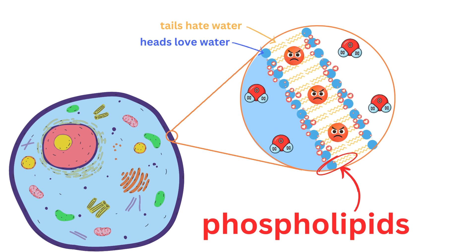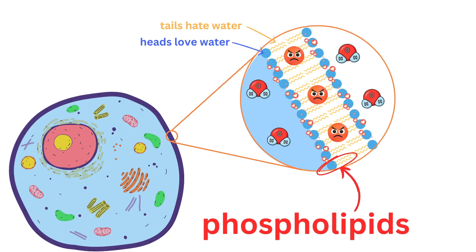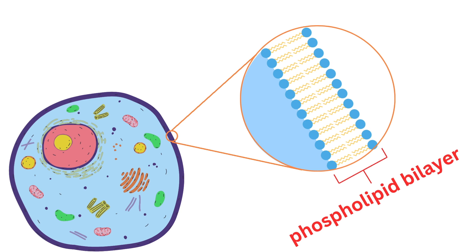Creating a barrier that's tough for many substances to cross. This structure is known as the phospholipid bilayer, a flexible yet strong layer that makes up the foundation of the cell membrane and helps it perform its crucial role.